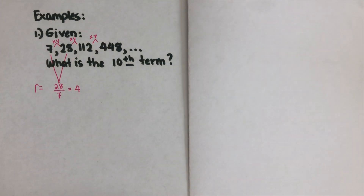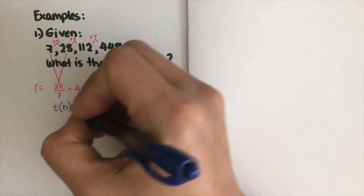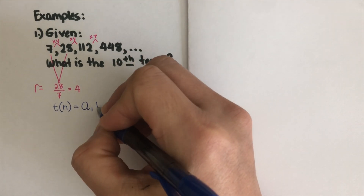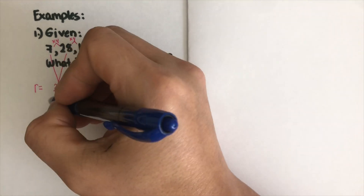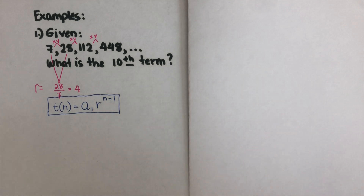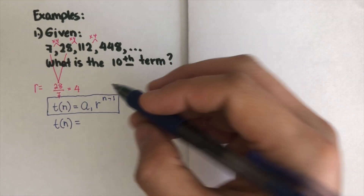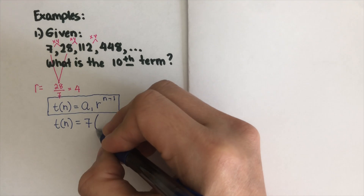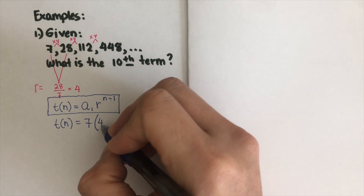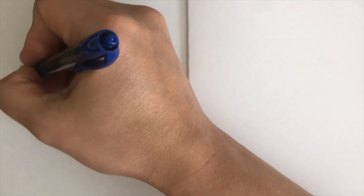Now we're asked for the 10th term. Before finding it, we write the equation first. The general equation for a geometric sequence is t(n) = a₁ · r^(n-1). For this problem, a₁ = 7 and r = 4, so the specific equation is t(n) = 7 · 4^(n-1). The general equation stays on top as reference.